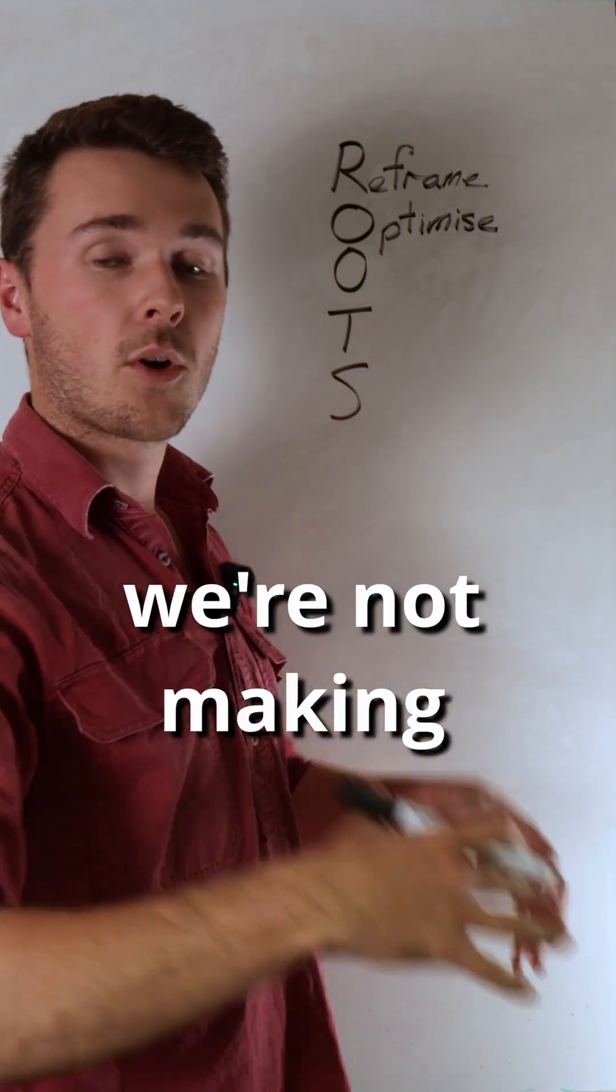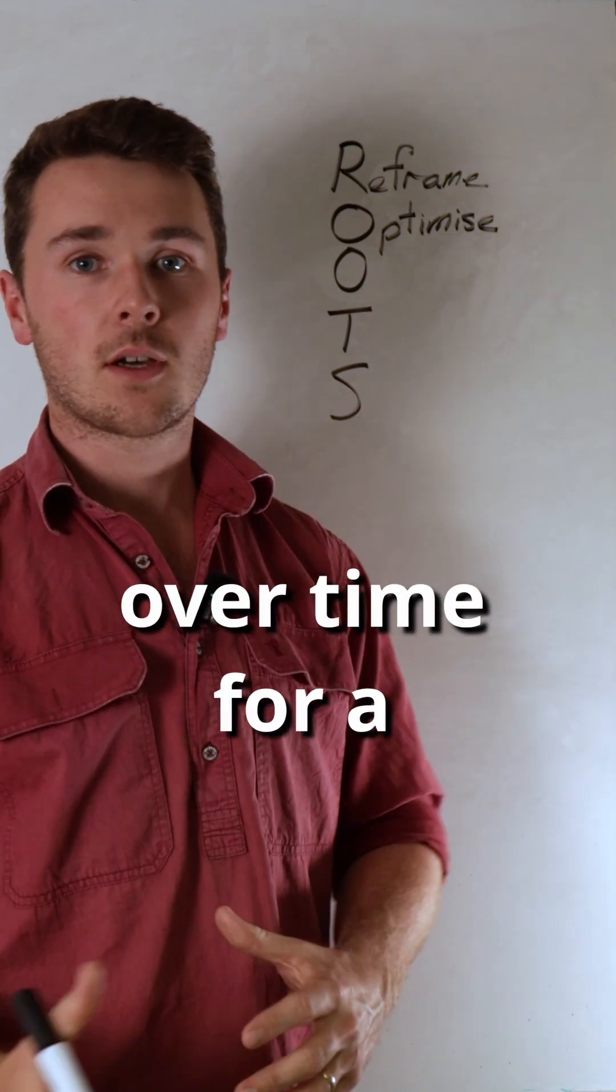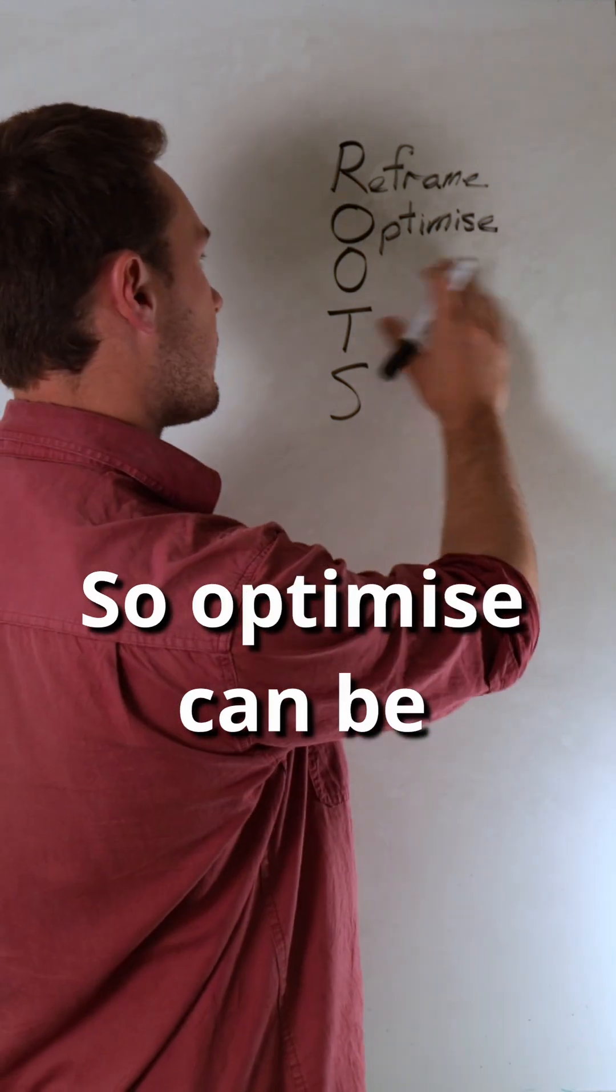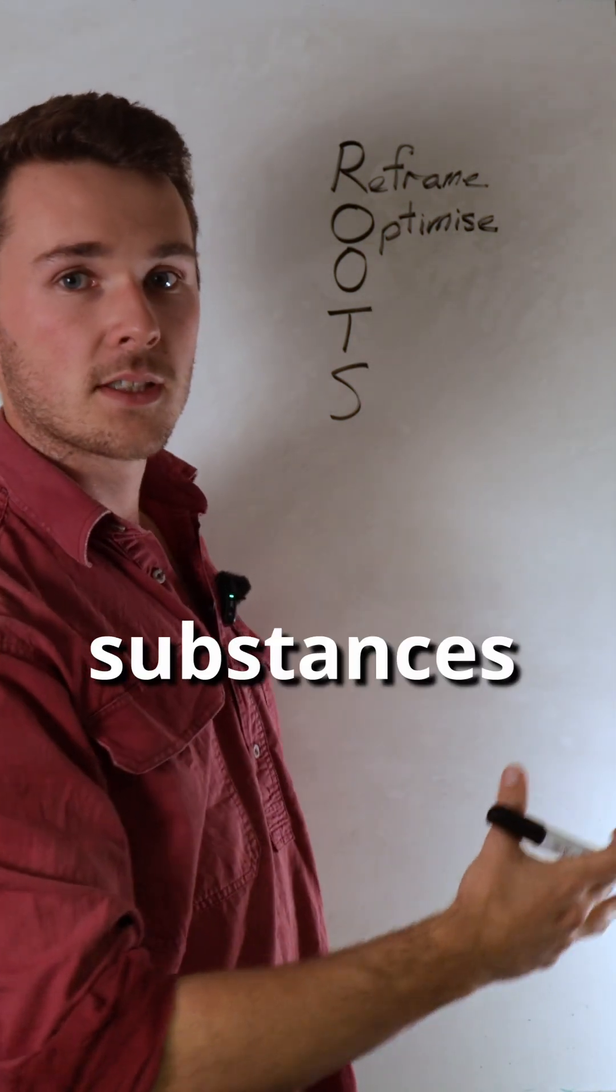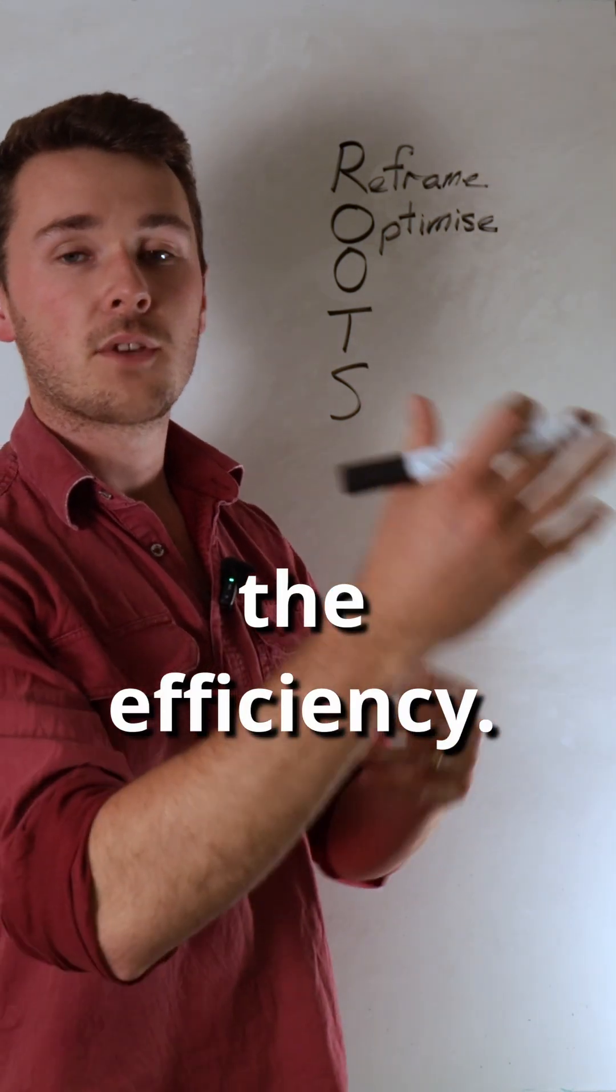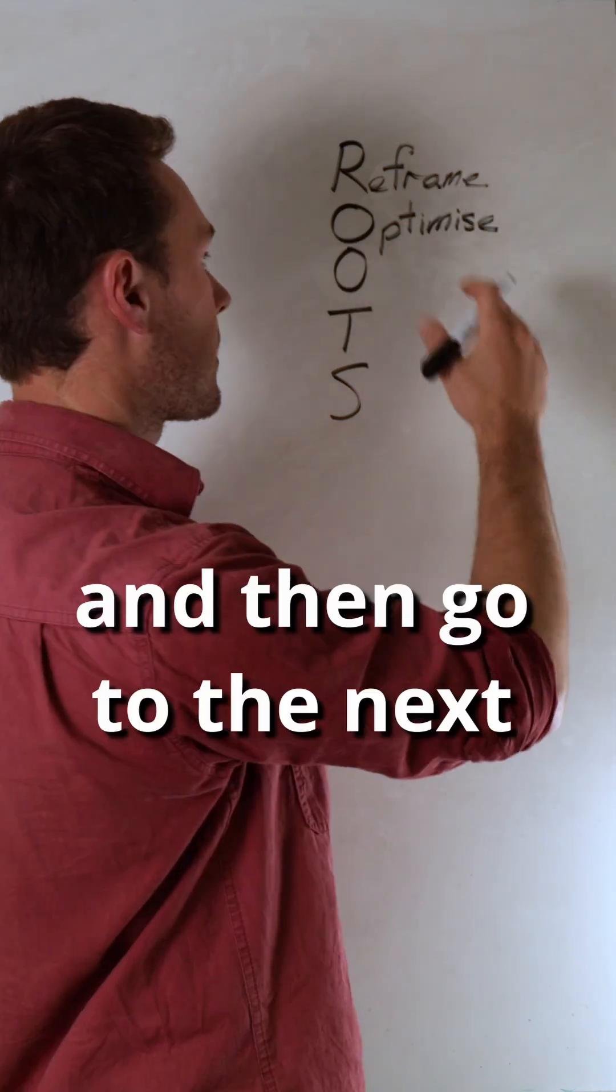The important thing is we're not making massive changes. We're doing slow changes over time for a sustainable transition. Optimize can be things like adding humic substances to your starter fertilizer to increase efficiency. It's important we start with this before moving to the next component.